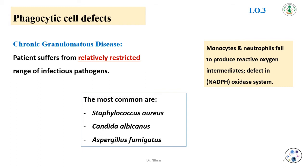Second, the most virulent organisms tend to be those highly resistant to the oxygen-independent microbial mechanisms of the phagocytes. Monocytes and neutrophils fail to produce reactive oxygen intermediates due to a defect in the NADPH oxidase system. The most common organisms are Staphylococcus aureus, Candida albicans, and Aspergillus, in this type of phagocytic cell defect disease.